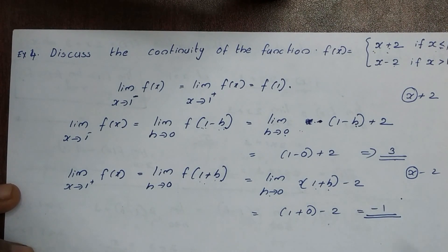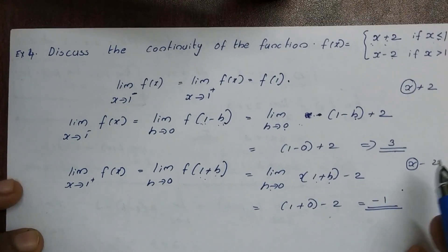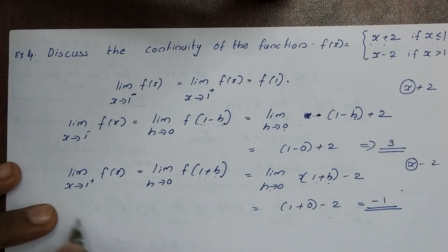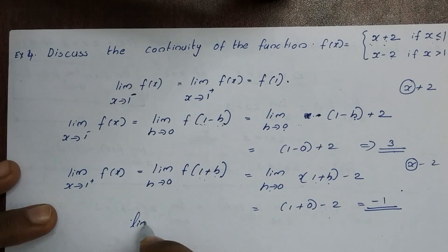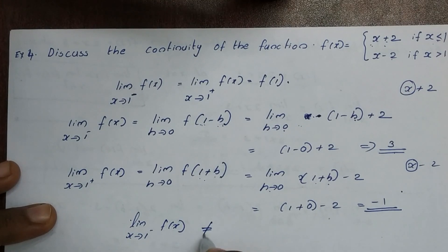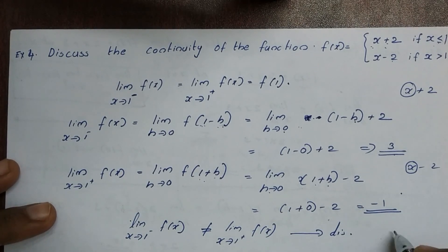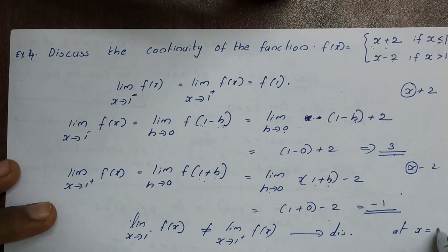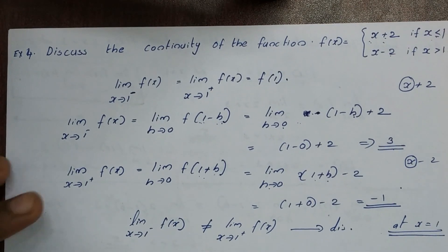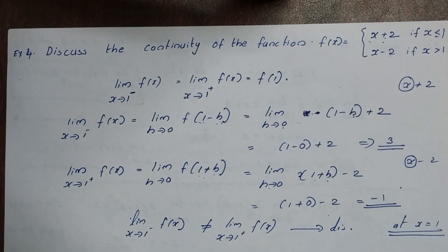The left-hand limit is 3 and the right-hand limit is -1. Since the left-hand limit does not equal the right-hand limit — that is, limit x tends to 1 minus f(x) is not equal to limit x tends to 1 plus f(x) — the function is discontinuous at x equal to 1.